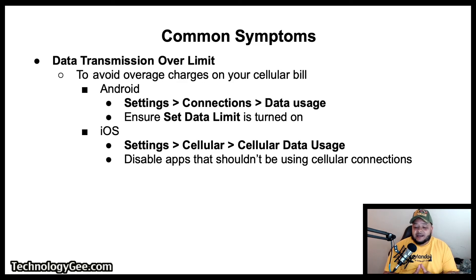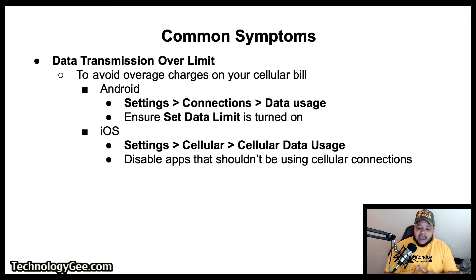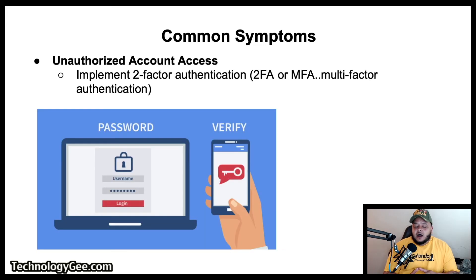For data transmission over limits, to avoid data overages and additional charges: on Android, go to Settings > Connections > Data Usage and ensure Set Data Limit is turned on to display a warning before exceeding limits. On iOS, go to Settings > Cellular > Cellular Data Usage and disable any apps that should not be using cellular connections.